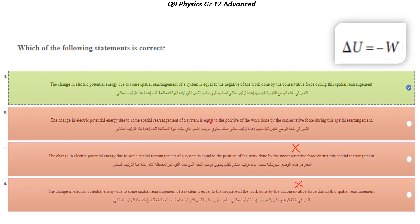Which statement describes this equation? Look here at option B — it says delta U is equal to positive of the work. No, that's not correct. So option A is the correct answer.